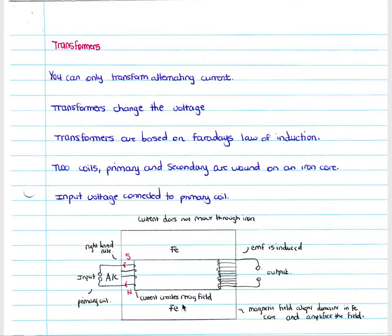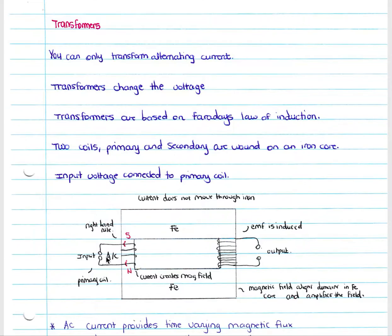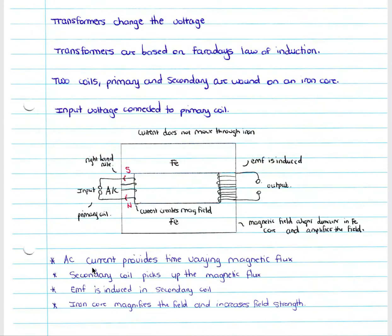Your input voltage is connected to the primary coil. AC current flows through it, so at any point in time your current could be flowing this way or it could be flowing the other way — it's alternating. We must remember that the direction is therefore changing at any point in time.